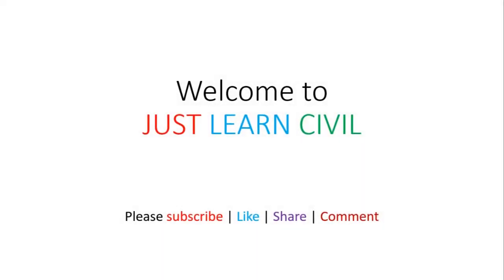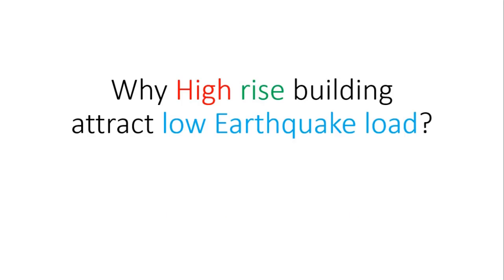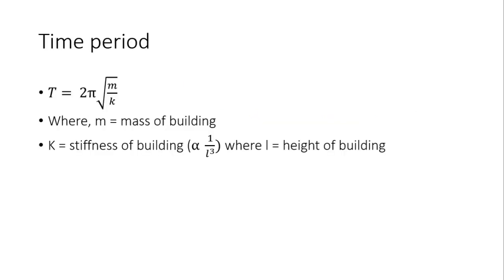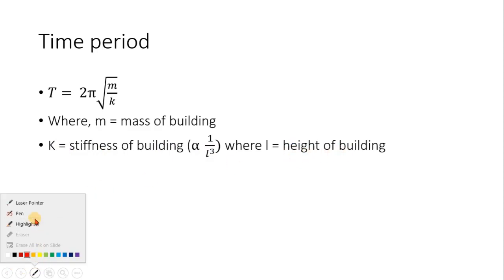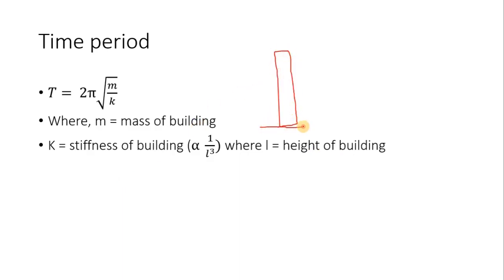Welcome to this tutorial in the structures series. We will learn about why high-rise buildings attract low earthquake load. First, let us understand the time period. Time period is given by 2π√(m/k), where m is the mass of the building and k is the stiffness, which is inversely proportional to the cube of the height of the building.